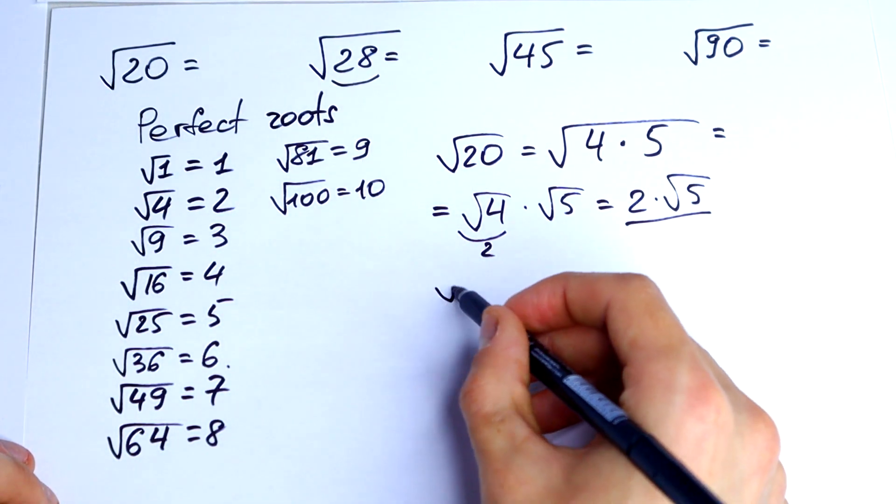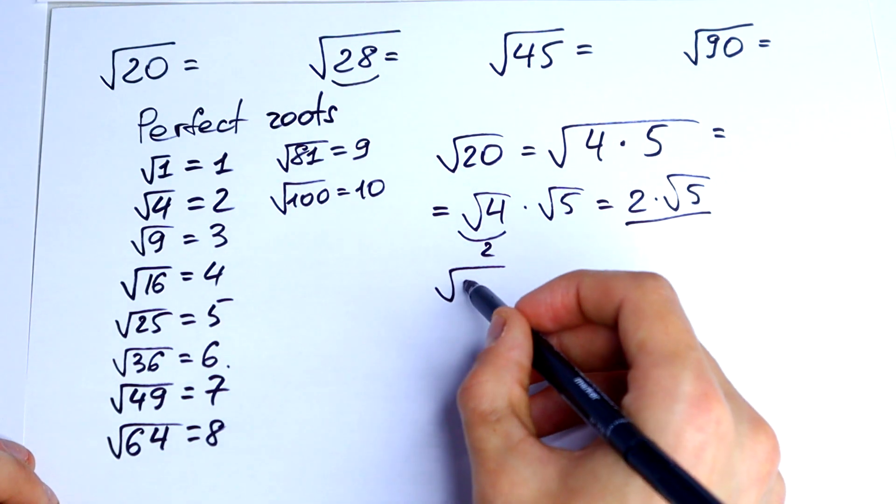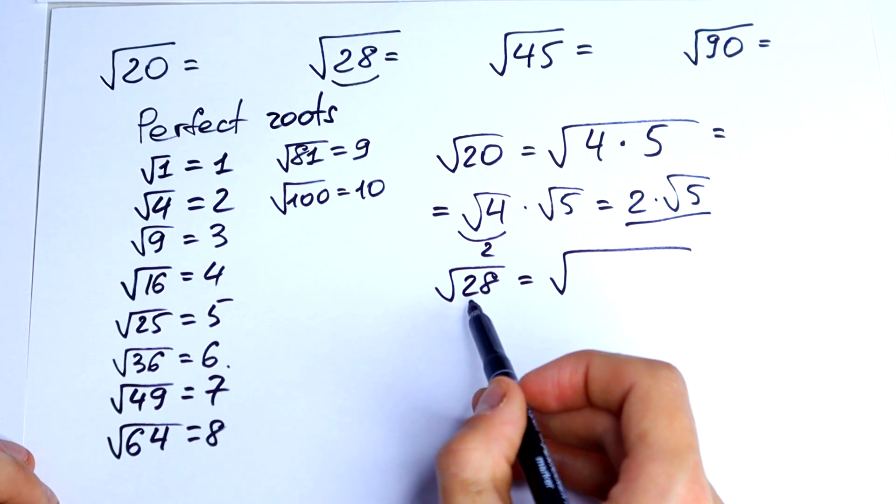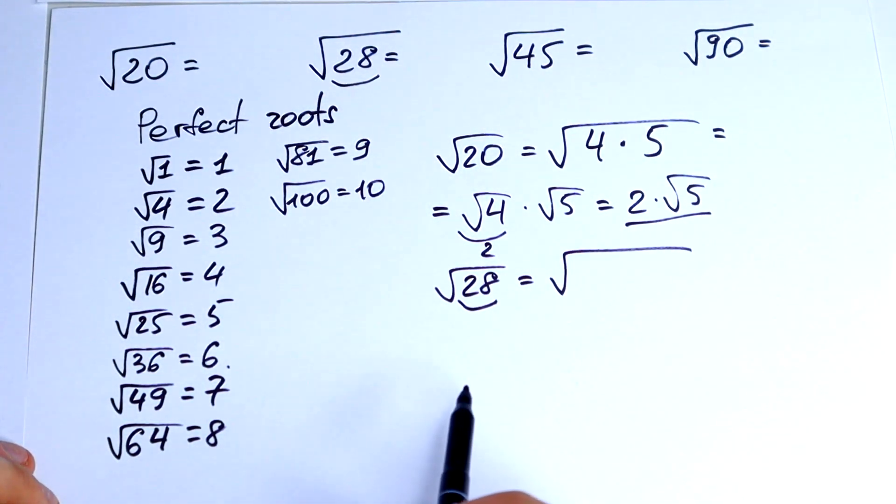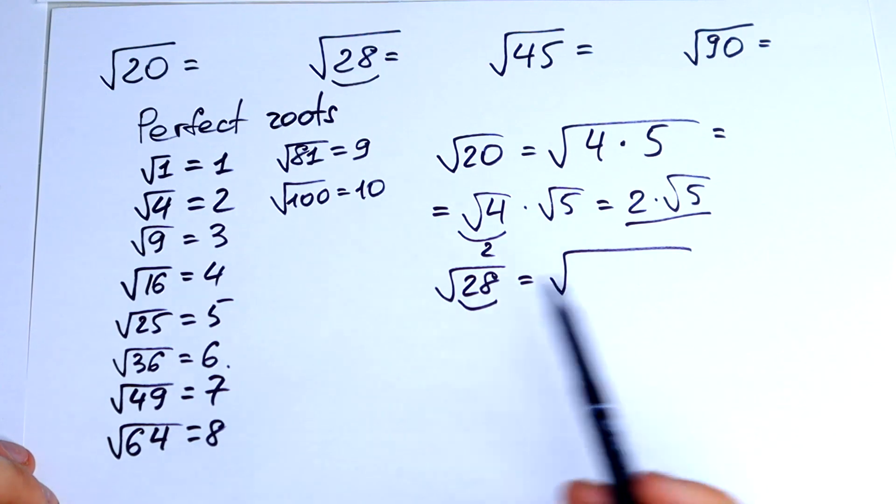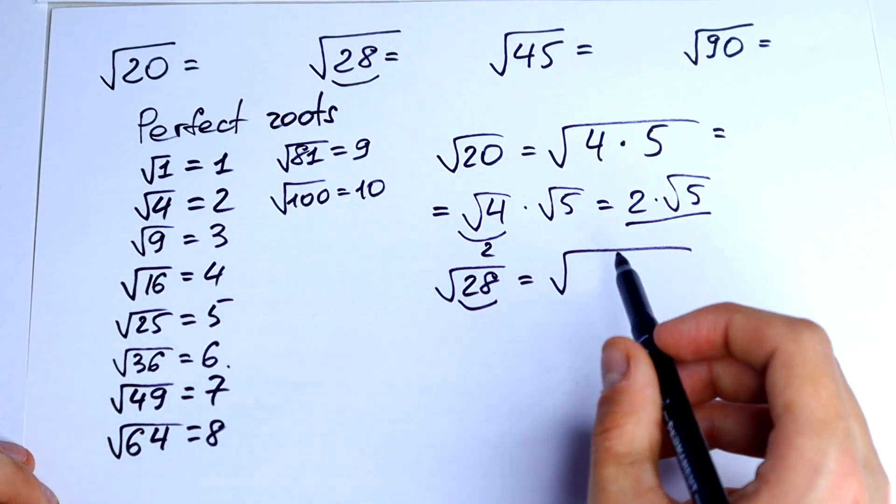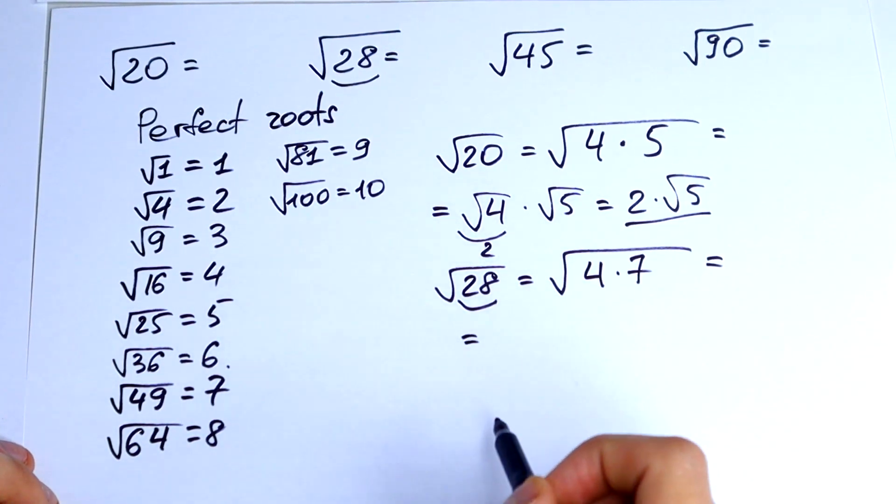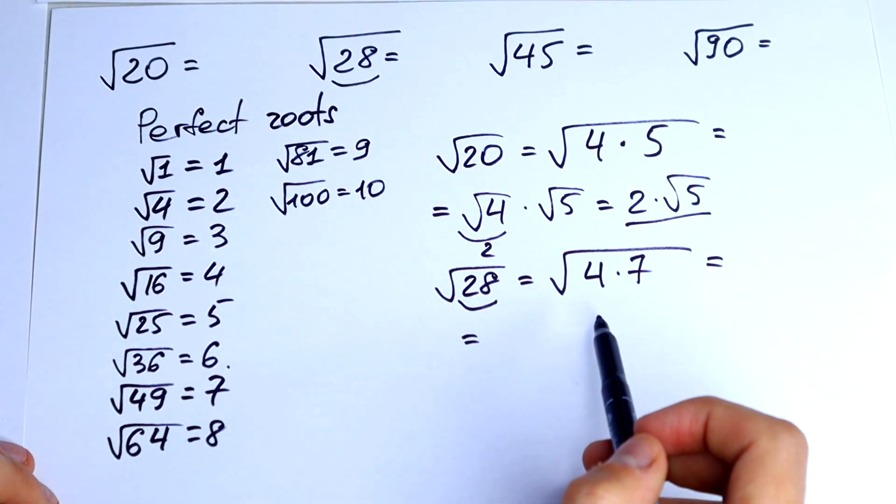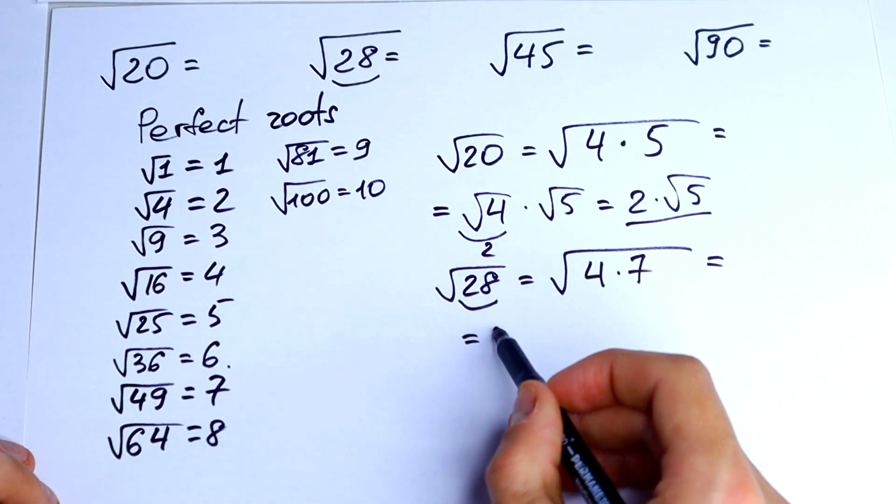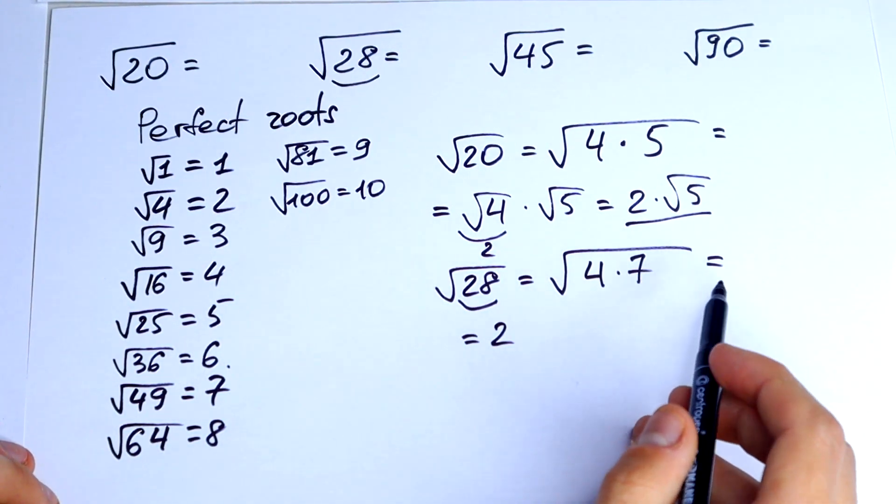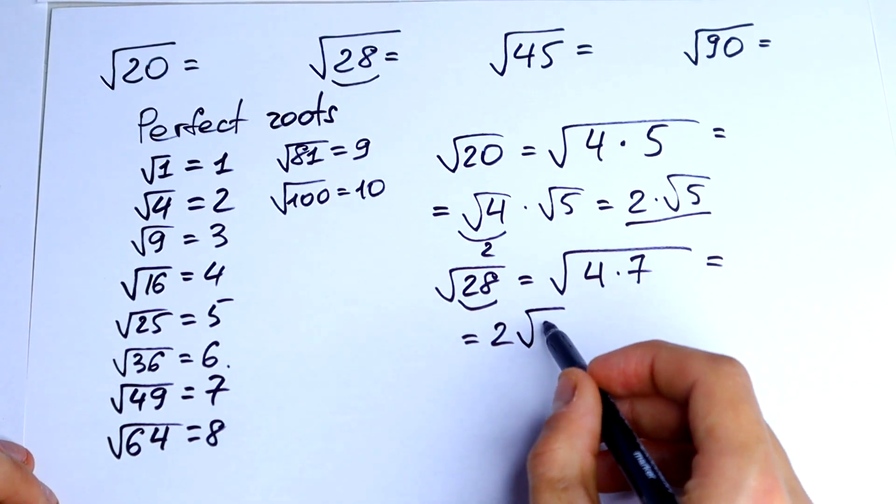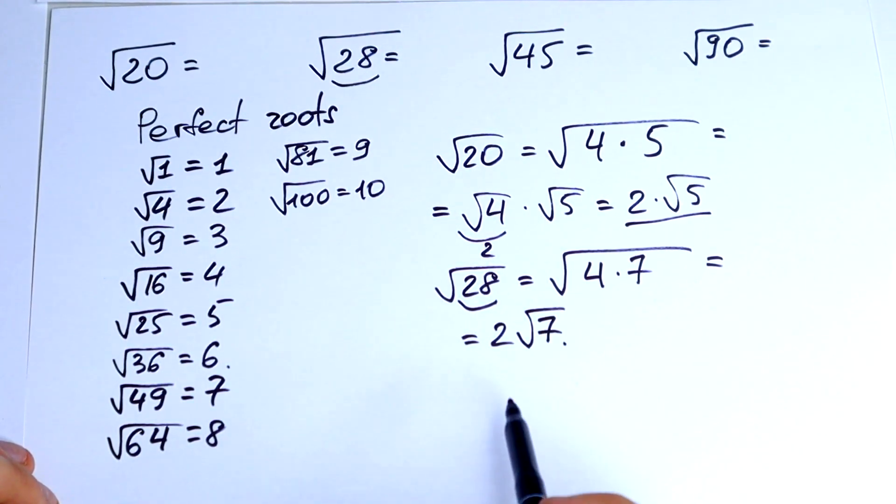Let's calculate this one, square root of 28. How can we represent this 28? 2 times 14 is not good. Let's write 4 times 7. Square root of 4 times square root of 7. Square root of 4 we can calculate, it would be 2, and square root of 7 we can't calculate, times square root of 7. This is an answer.